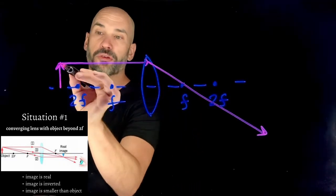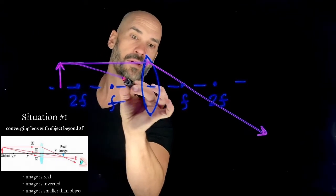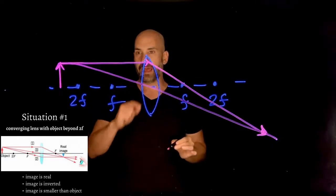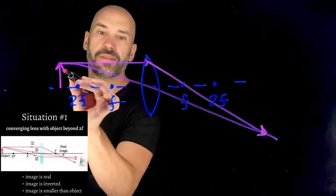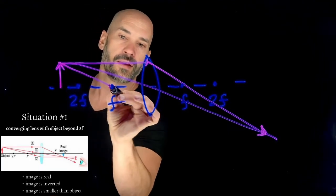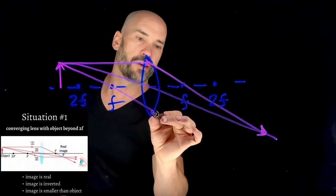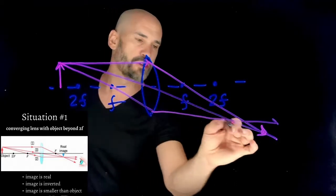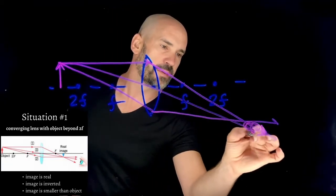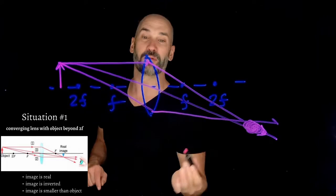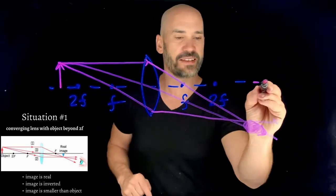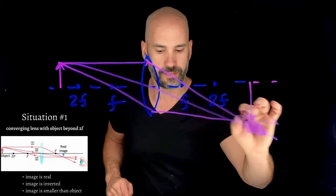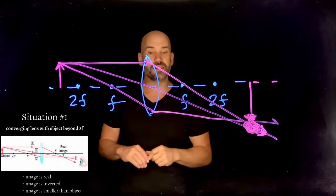We have a second special ray that goes through the center, and they intersect. We have a third special ray that goes through the focal length on the near side and then cuts over parallel. All three should be intersecting at the same point — if you do this with a ruler it's much more clear.